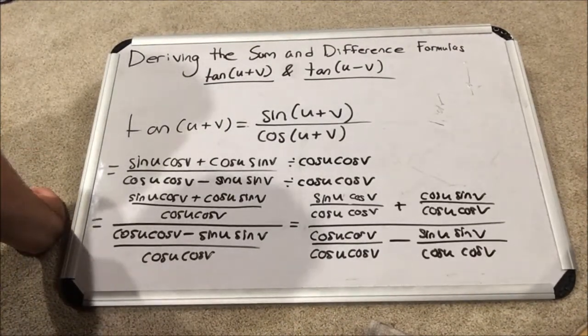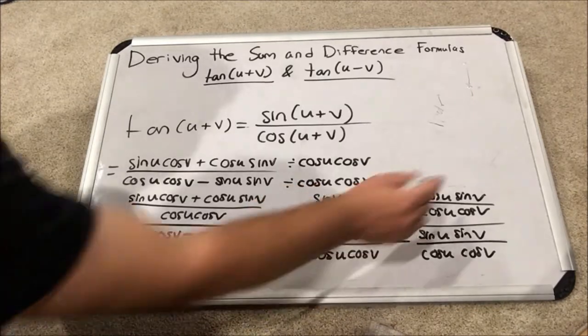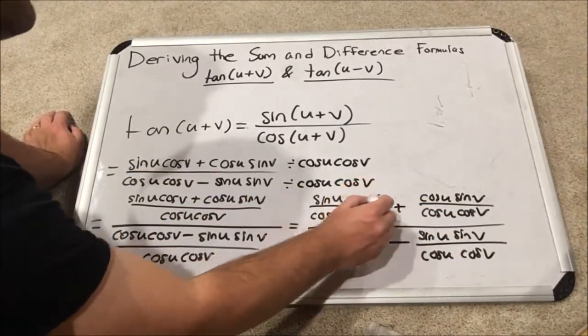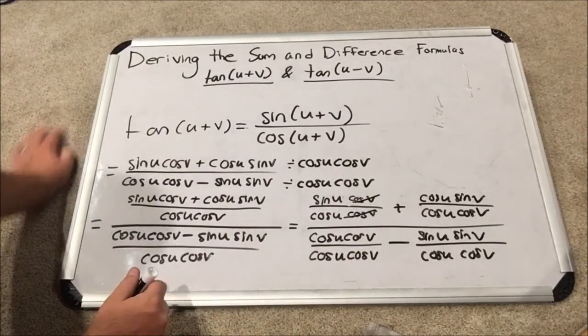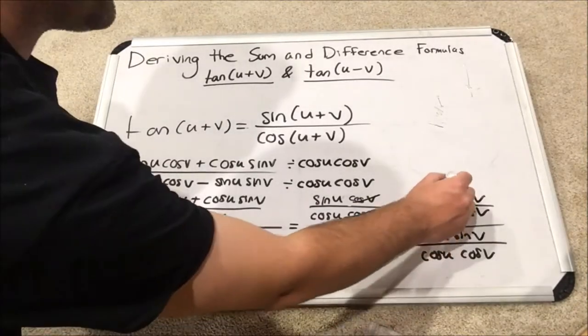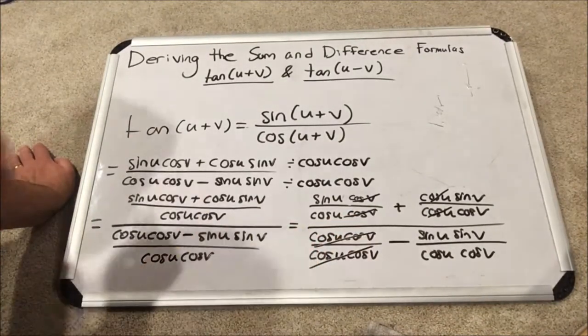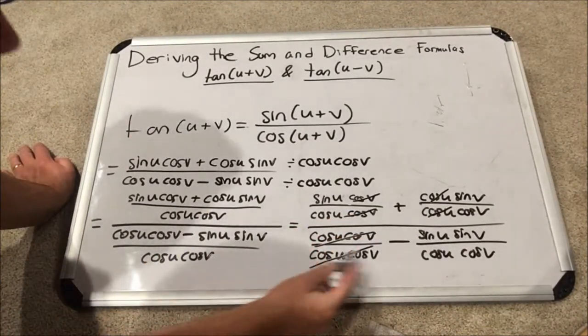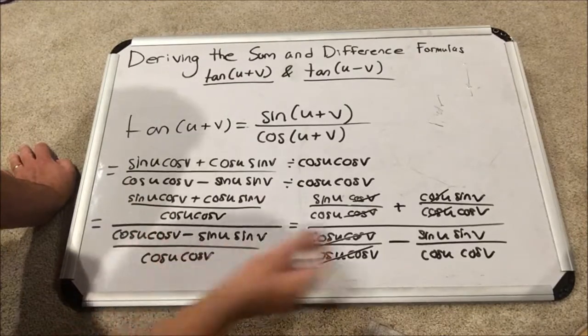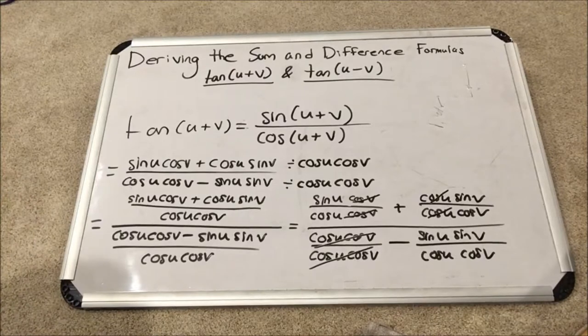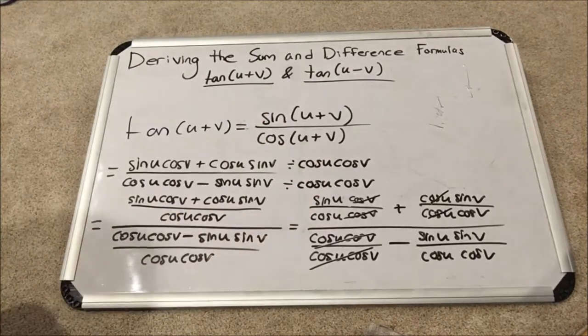So back to where we were, we're going to cancel some things in each of these four mini fractions. In the first fraction, we see that the cosine v's cancel. In the second fraction, we see the cosine u's cancel. Down below, everything cancels because we've got cosine u cosine v over cosine u cosine v. And in the last fraction, nothing cancels.